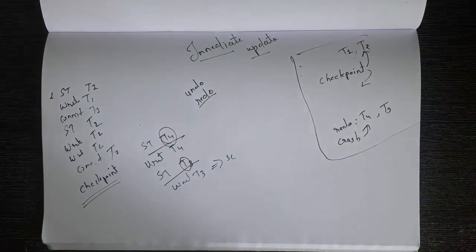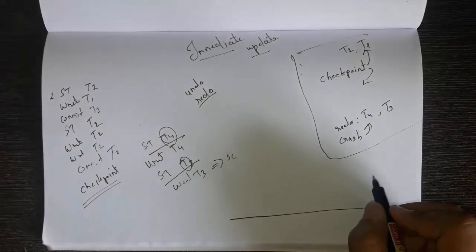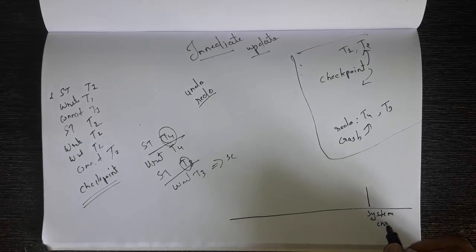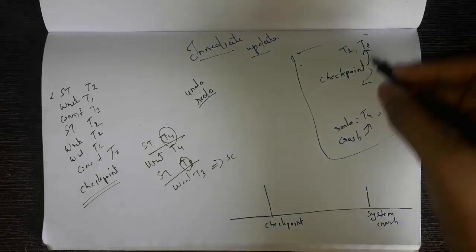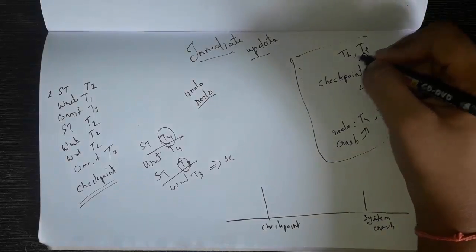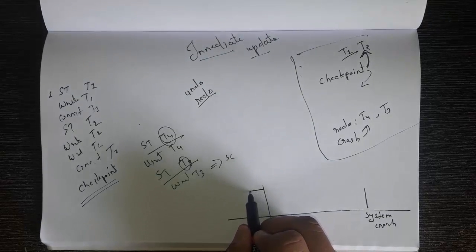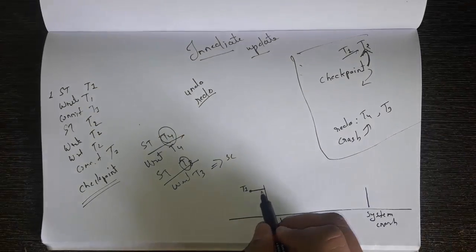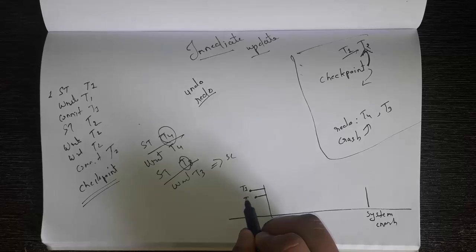Now, how to make a graph: first you have to make a line. There are two things to write — first the system crash, which occurs on the last side, and before that we have a checkpoint. There are two transactions committed before the checkpoint. T1 is committed first, so make a line and write T1. Then the second transaction T2 is committed after T1 on the timeline, so write T2 below T1.